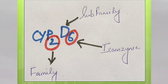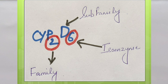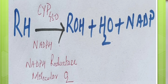The family is designated by numbers such as 1, 2, 3, 4, 5. Subfamily is designated by letters such as A, B, C, D, E and isoenzyme is represented by numbers. For example, cytochrome P2D6 where 2 is the family, D is the subfamily and 6 is the isoenzyme.